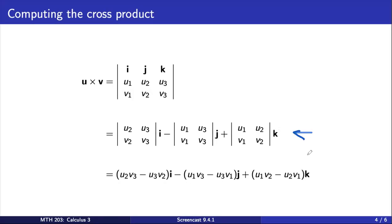To get from this second line down to the last line, we use the determinant of a 2×2 matrix formula from the previous slide.